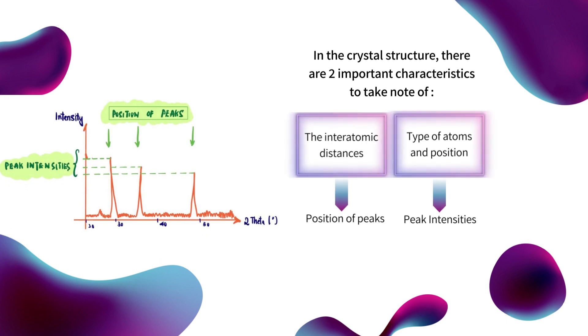In the crystal structure, there are two important characteristics to take note of. First is the interatomic distances, which determines the position of peaks, and secondly is the type of atoms and position, which determines the peak intensities.